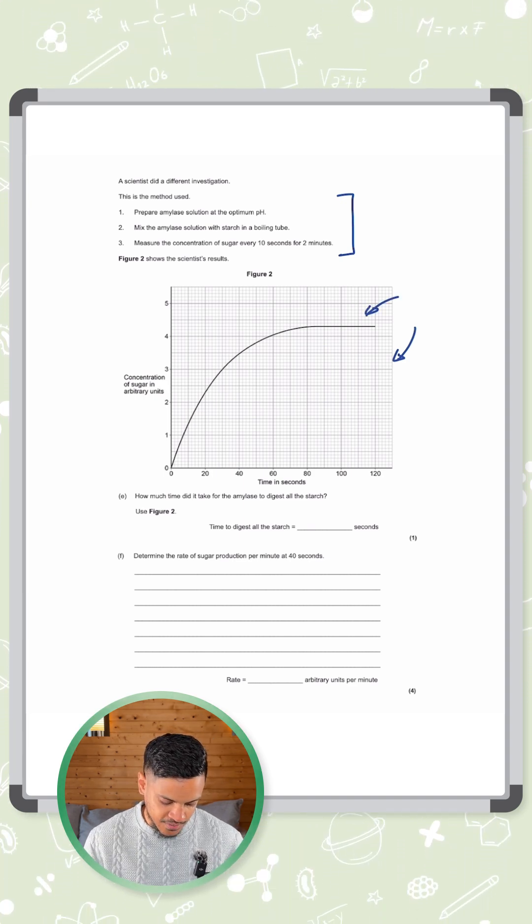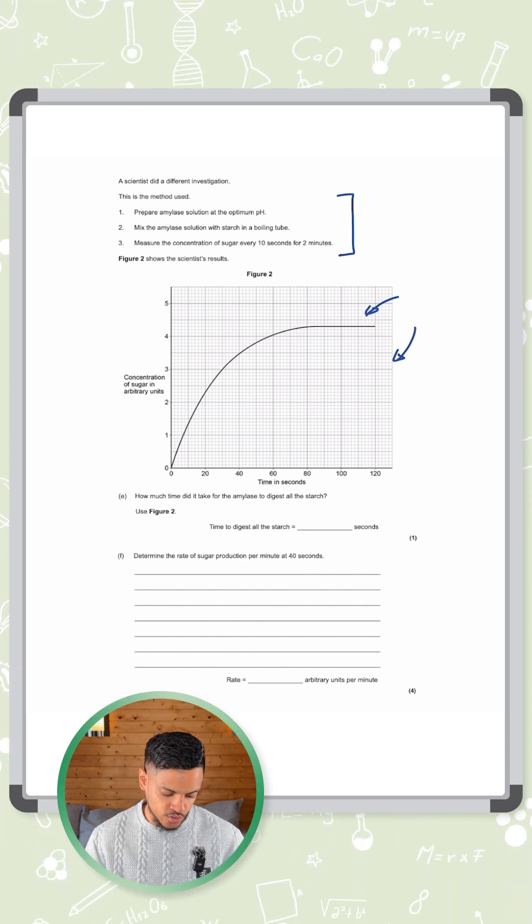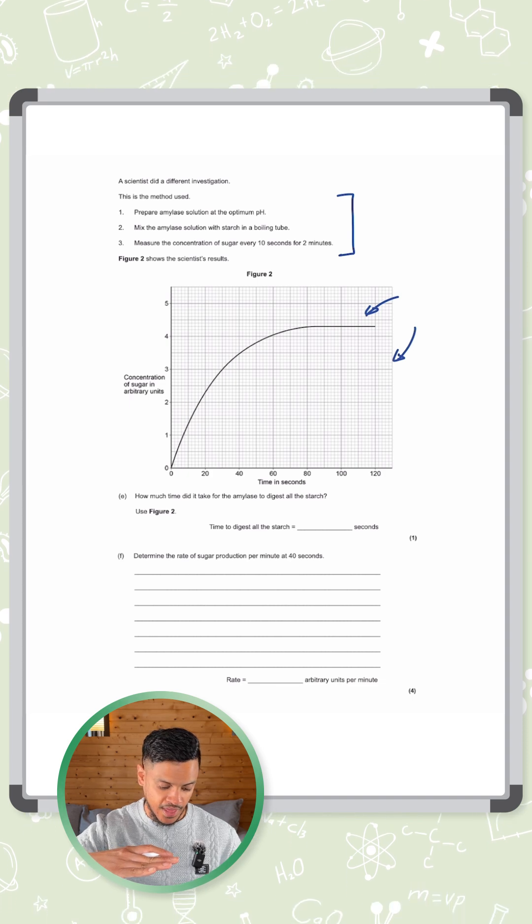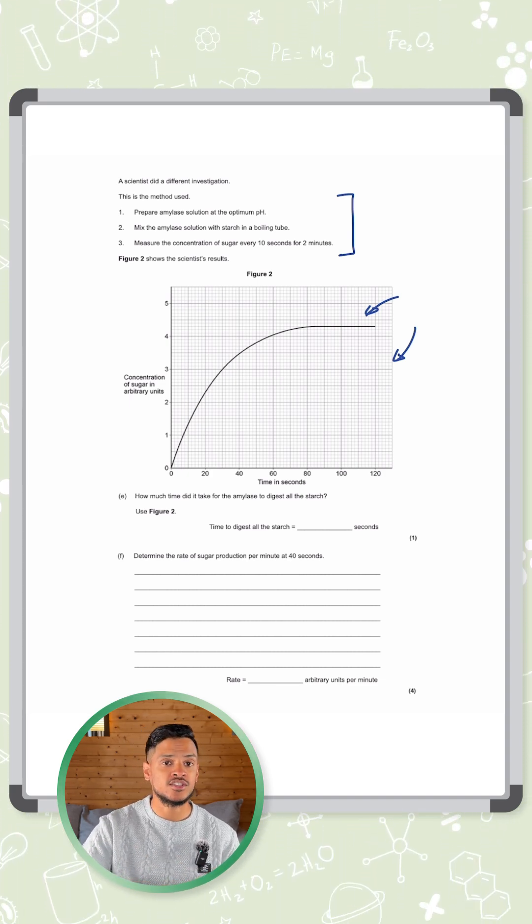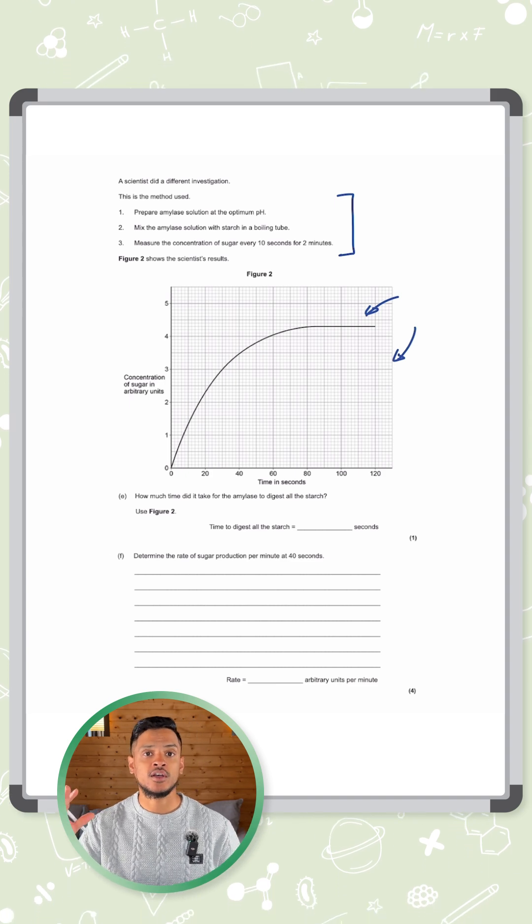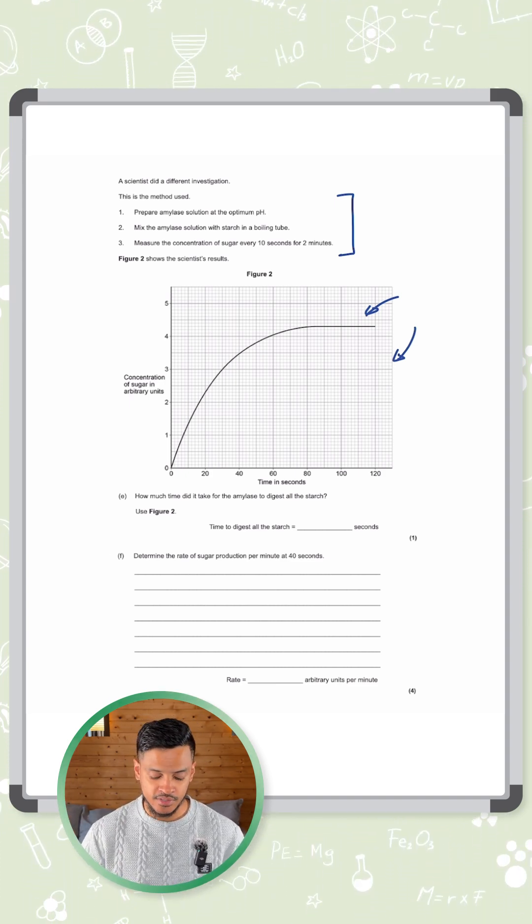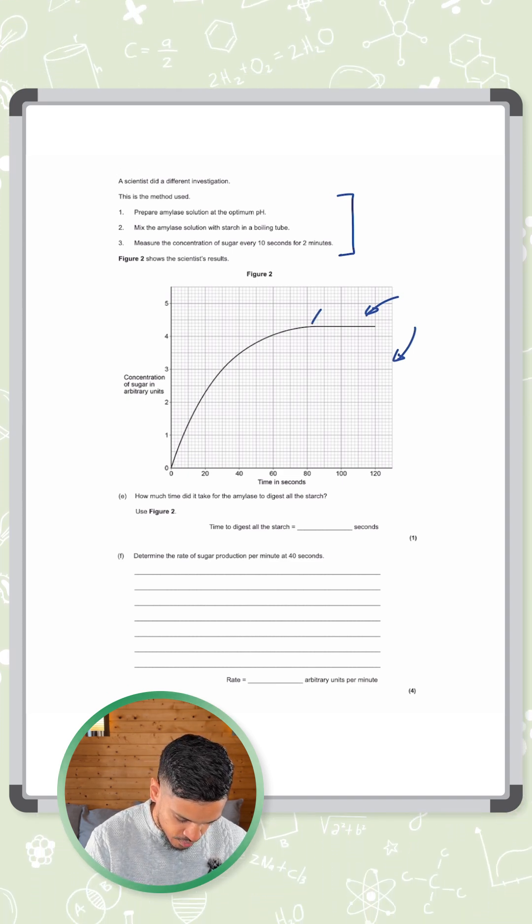How much time did it take for the amylase to digest all the starch? That's the first question. To find that out, you want the point at which the graph becomes flat because at that point there's no more increase in sugar. That means you've had your maximum amount of sugar being produced from the starch. All of the starch has been broken down, so there's no more to be given. So that would be around this point here.